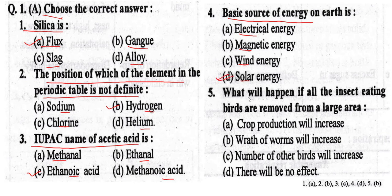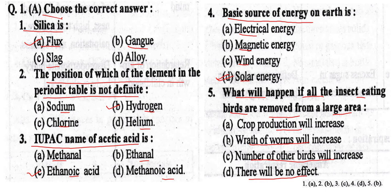Question No. 5. What will happen if all the insects that these birds eat are removed from a large area? Option A: Crop production will increase. Option B: Earthworms will increase. Option C: Number of other birds will increase. Option D: There will be no effect. The correct option is Option B, earthworms will increase.